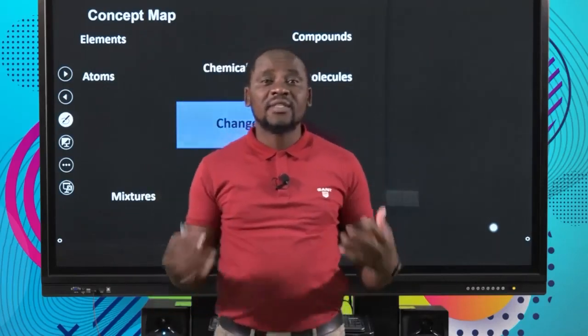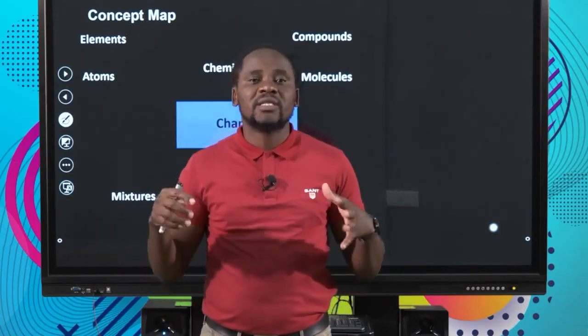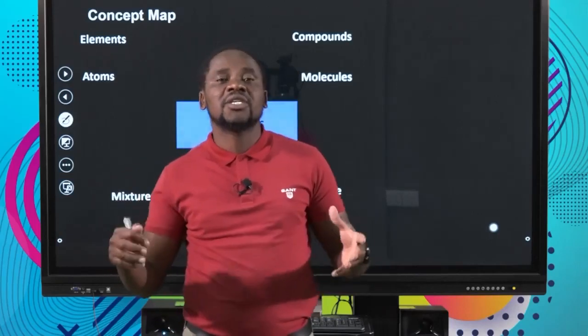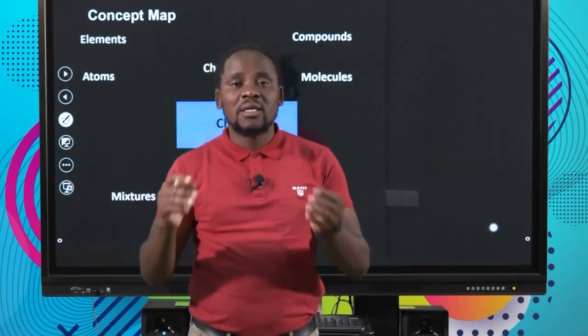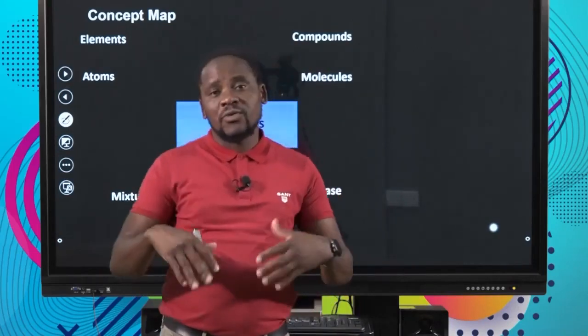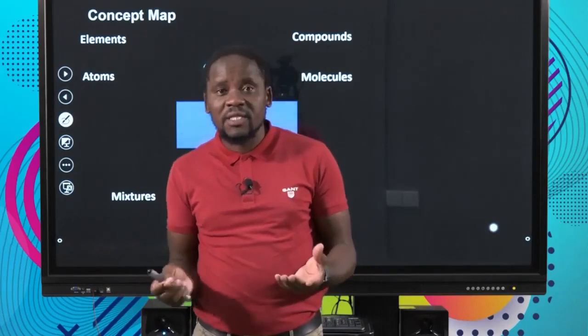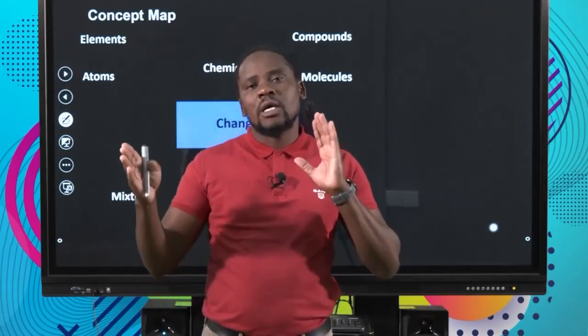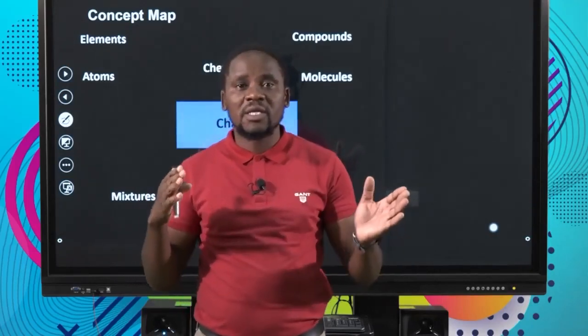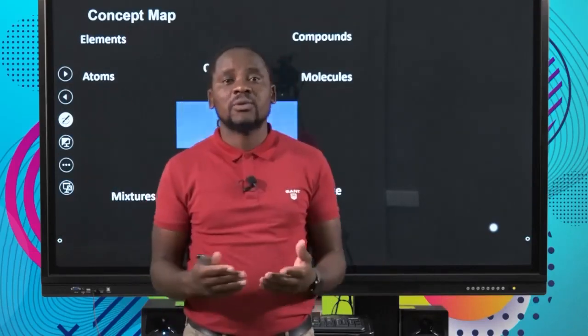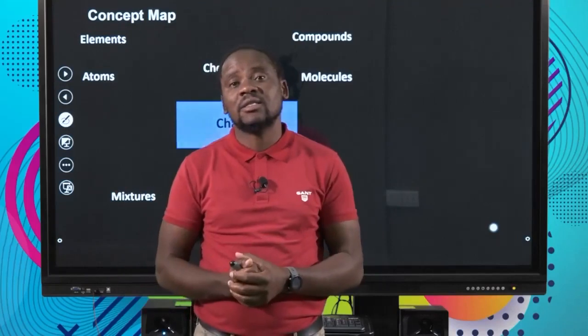Welcome back. We're still looking at different types of changes which matter can undergo. So far we've managed to look at what happens in a physical change, where a material changes from one phase to another. We've looked at different aspects: size, shape, chemical composition, physical properties, and mass. Now we want to change gears and look at what exactly happens in a chemical change, so that we can show differences and similarities between a physical and a chemical change.